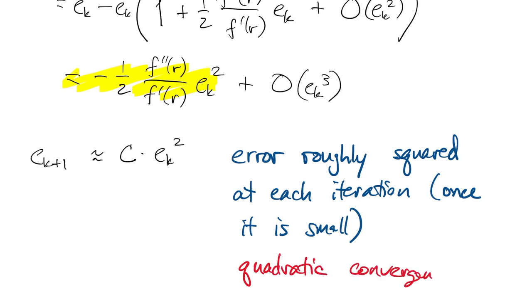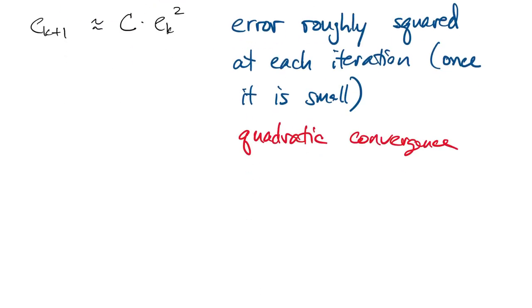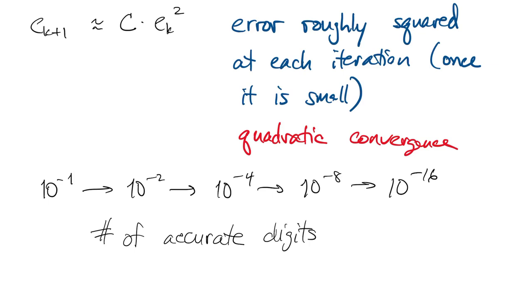That's what we call quadratic convergence. So for example, if we had an error of 10 to the minus 1, we would expect that to become 10 to the minus 2, then 10 to the minus 4, then 10 to the minus 8, and finally we'd get down to machine precision. So often we say that the number of accurate digits doubles at each step.